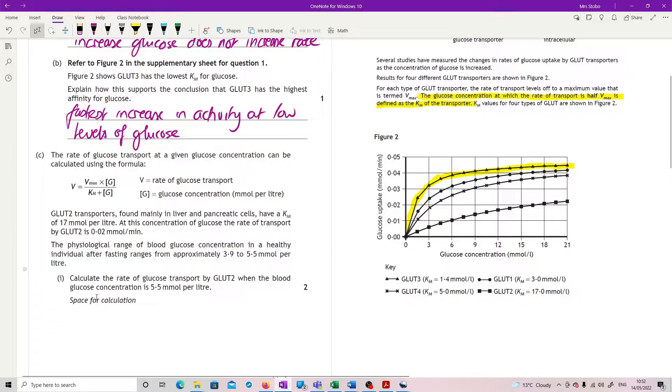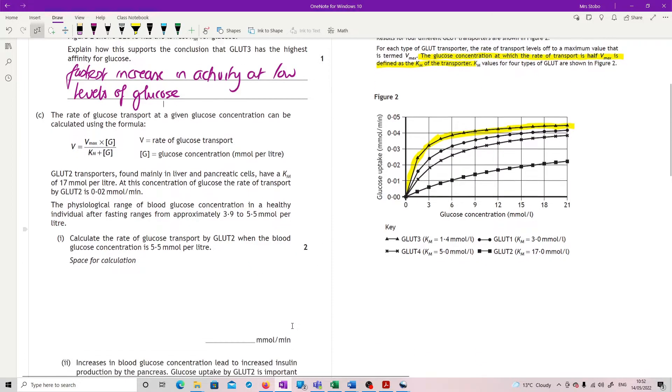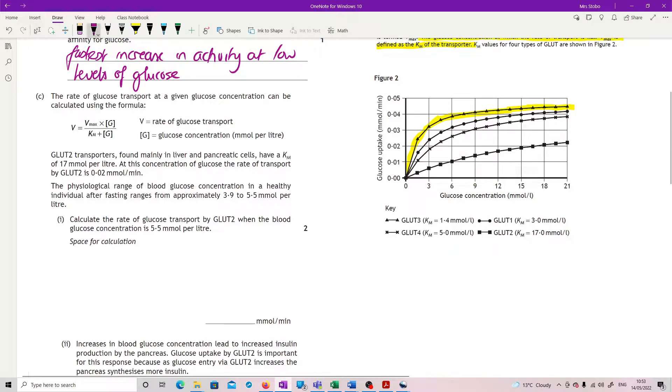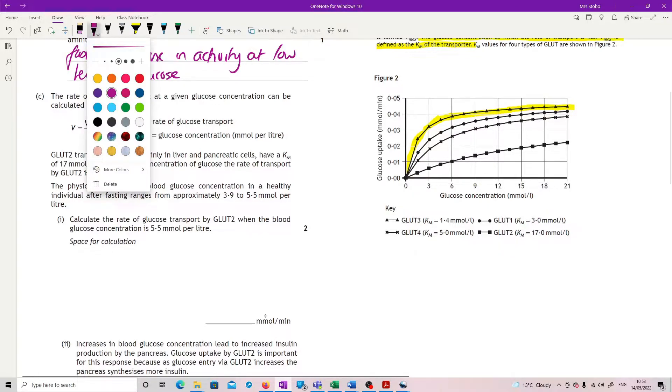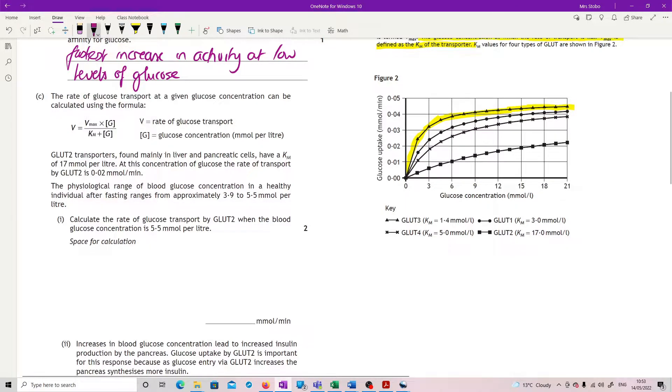The physiological range of glucose concentration in a healthy individual after fasting ranges from approximately 3.9 to 5.5 millimoles per liter. Calculate the rate of glucose transport by GLUT2 when the blood glucose concentration is 5.5 millimoles per liter. Right, I'm going to move it down a little bit. I really didn't like this question when I was reading it, but I think it's properly problem solving, right?